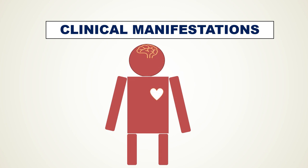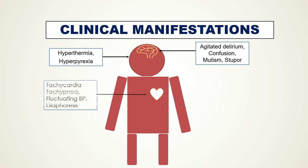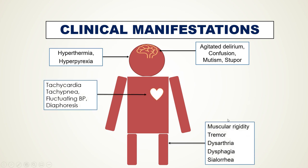The tetrad of symptoms typically evolves over one to three days. It begins with mental status changes consisting of agitated delirium with confusion, which can evolve to catatonic signs, mutism, stupor, and eventually coma. These are followed by generalized muscular rigidity with tremor, and patients may also have dysarthria, dysphagia, and sialorrhea (excessive salivation). Hyperthermia with body temperatures above 38.4 degrees Celsius is typical of NMS.